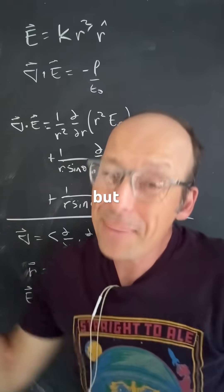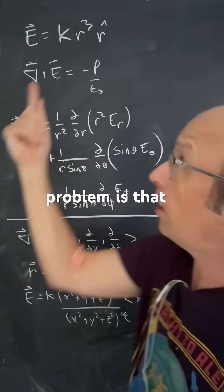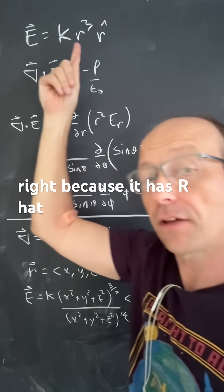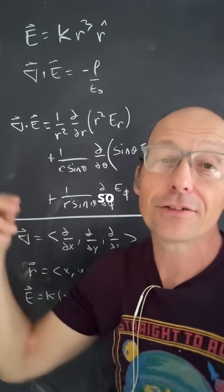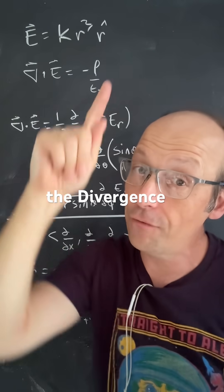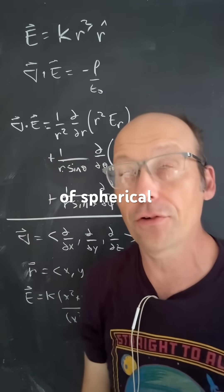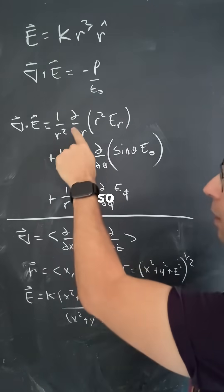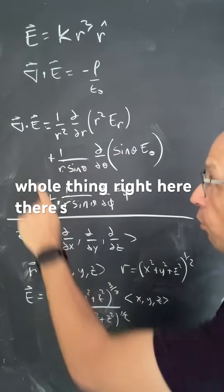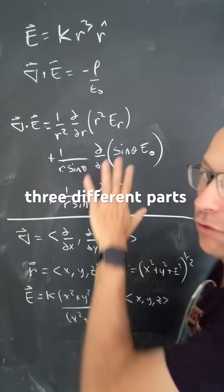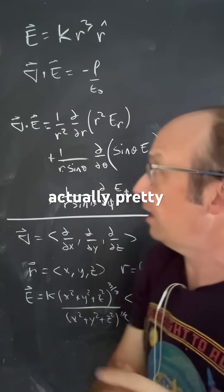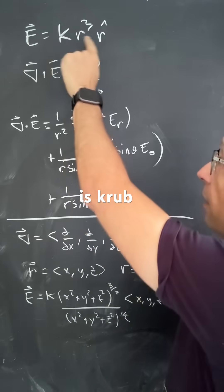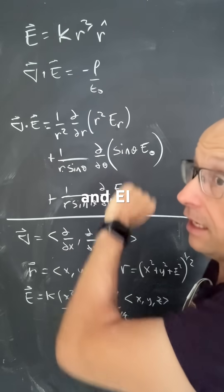The problem is that this is in spherical coordinates because it has r̂, so you have to use the divergence in spherical coordinates. That's this whole expression right here — there are three different parts. It's actually pretty easy because Er is kr³, while E-theta and E-phi are zero.